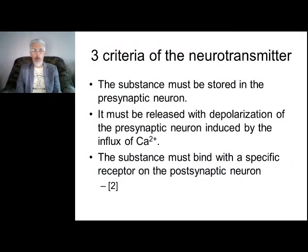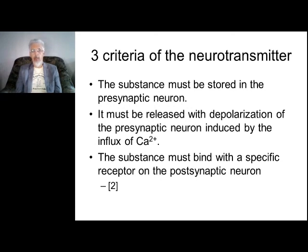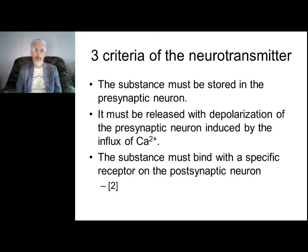Now a very important picture discussing the main criteria of neurotransmission. What makes a substance a neurotransmitter? First, the substance must be stored in the presynaptic neurons. Second, it must be released with depolarization of the presynaptic neuron, including by influx of calcium or other ions like potassium. Third, the substance must bind with specific receptors on the postsynaptic neuron.